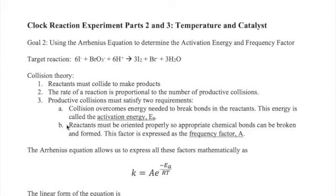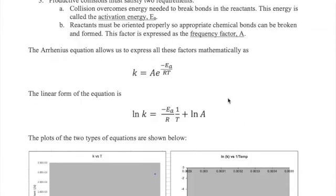B. The reactants must be oriented correctly so that the necessary chemical bonds can be broken in the reactants. This orientation component is called the frequency factor with symbol A. These factors are then combined together mathematically in the Arrhenius equation.